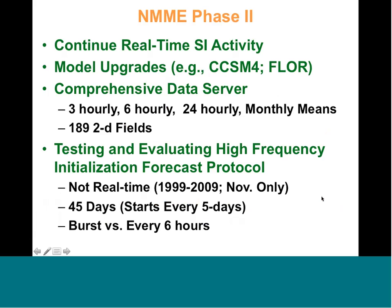NMME is well into phase two, continuing the real-time activity. Model upgrades are well in progress — the GFDL Flor system just came online, and CCSM4 is getting quite close. The data servers include three-hourly, six-hourly, 24-hourly, and monthly mean fields — 189 2D fields total — so it's a big dataset taking a lot of effort to get there. The core output at the moment is going to be 24-hourly output that is flowing as we speak.